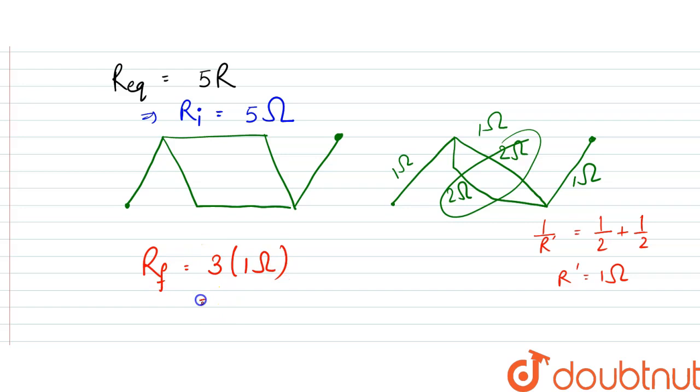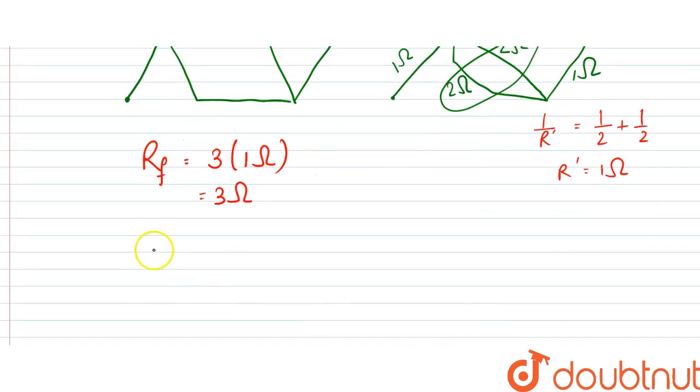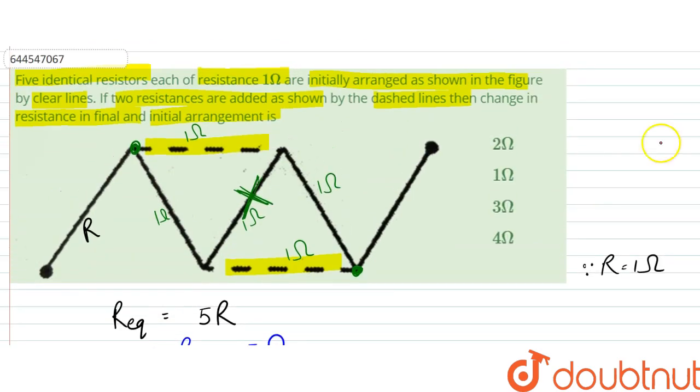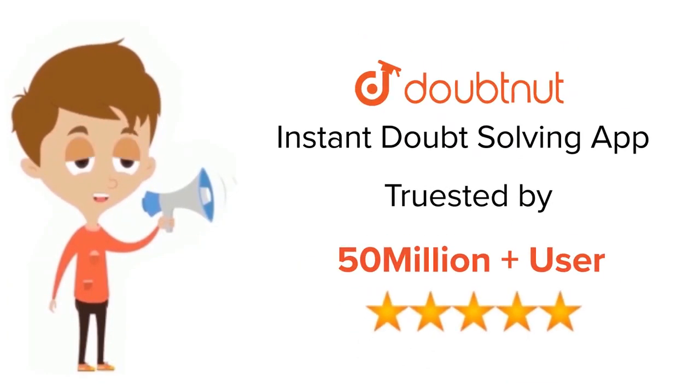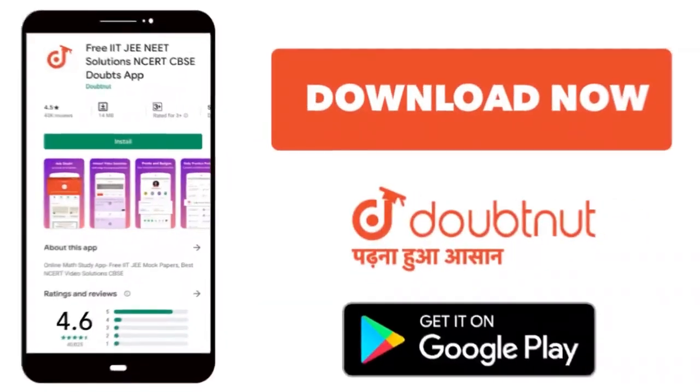Equal to R_i minus R_f, so that would be 5 - 3, which equals 2Ω. So the change in the resistance is 2Ω. Option A is the correct answer. Thank you. For class 6-12, IIT-JEE, and NEET level, trusted by more than 5 crore students, download Doubtnet app today.